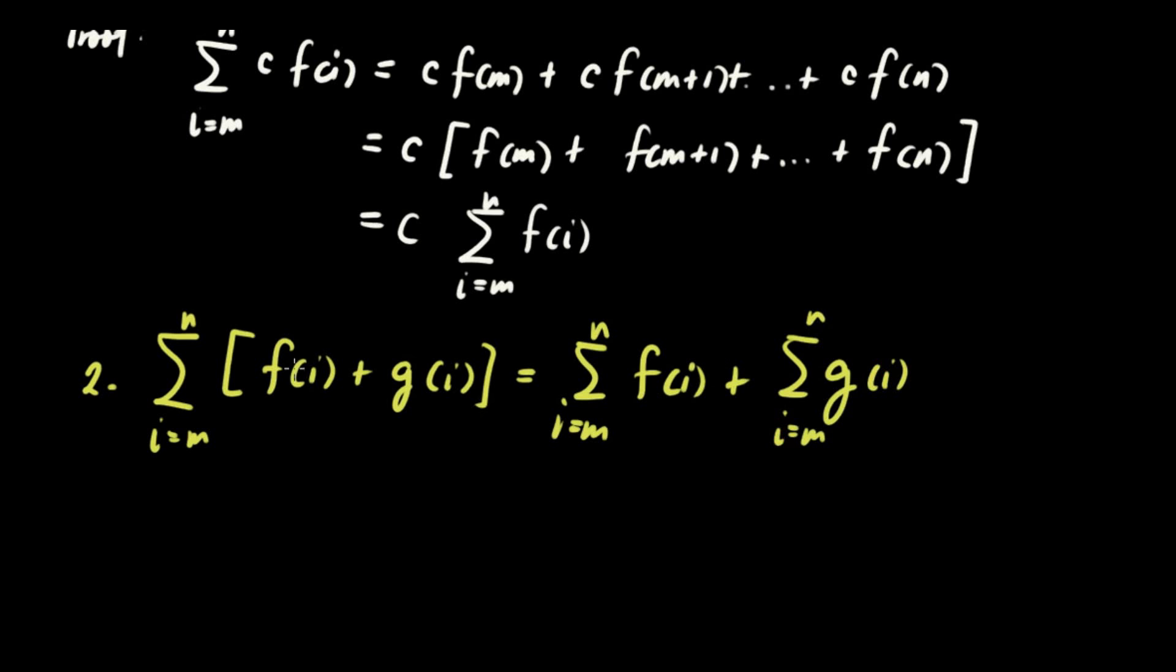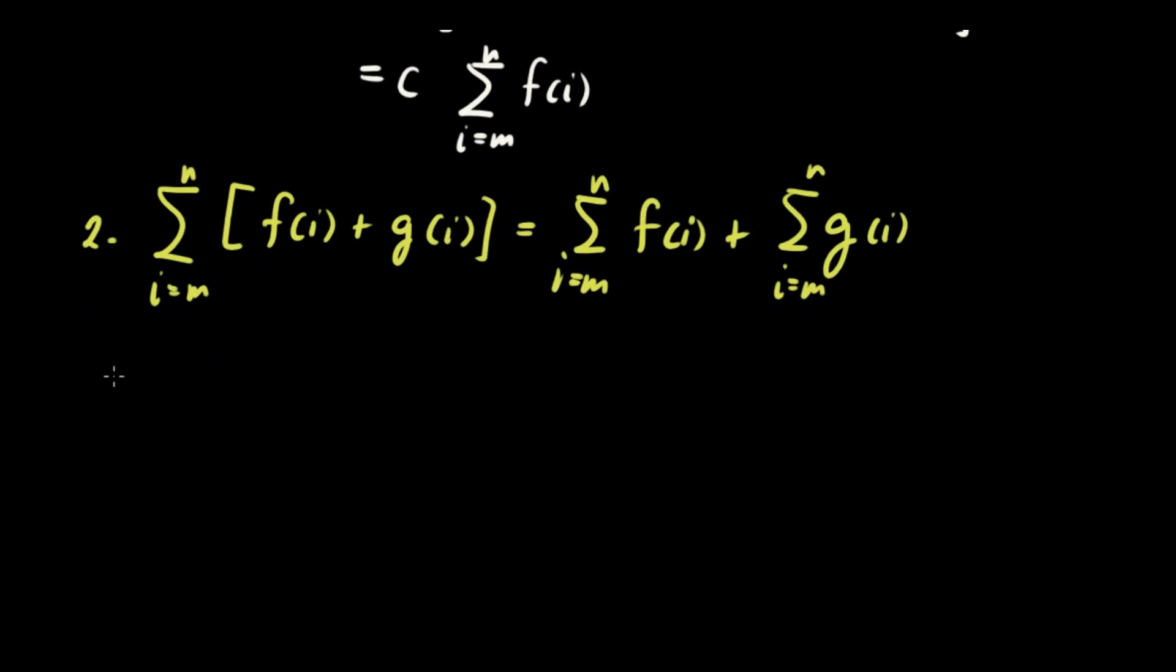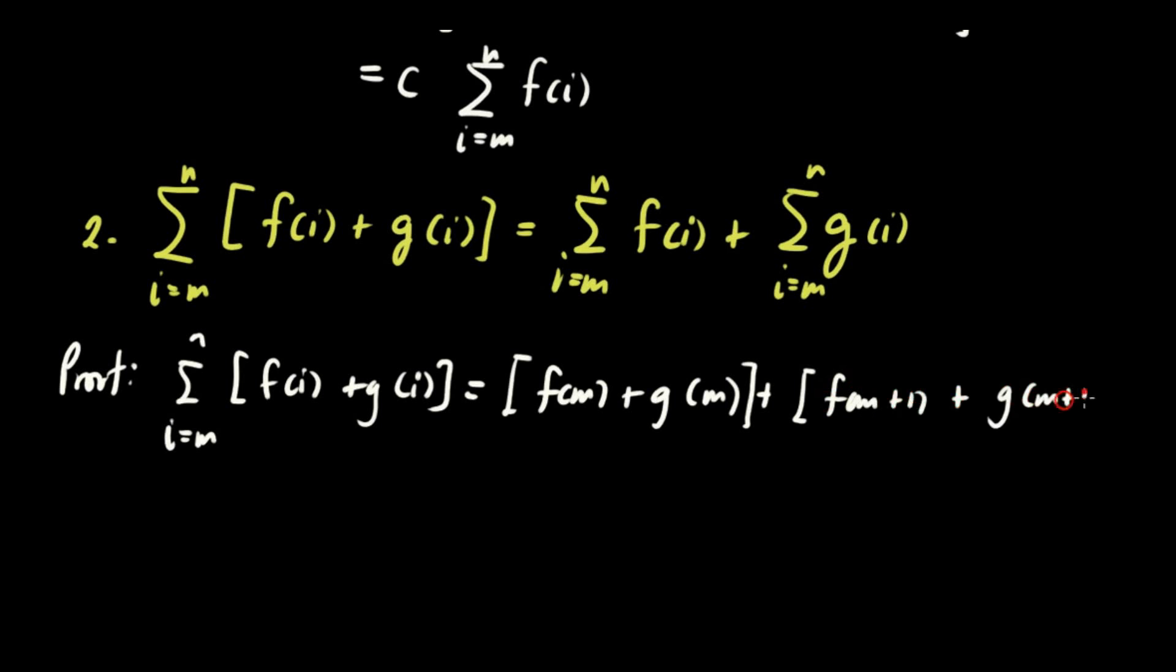So ibig sabihin lang nito, pwede mong kuha niyung separate summations ng dalawang functions. So let's show the proof. Let's go with this side. The summation of f of i plus g of i as i runs from m to n. This is equivalent to substituting m. And this will become f of m plus g of m plus the next one will be f of m plus 1, f of n plus g of m plus 1 plus up to the last term which is n, substituting n, f of n plus g of n.